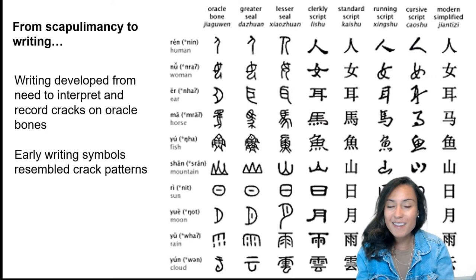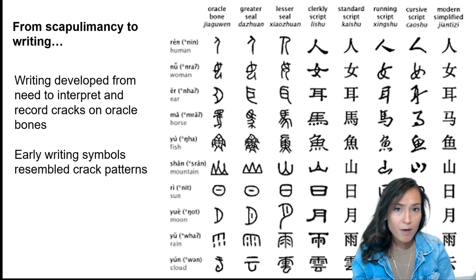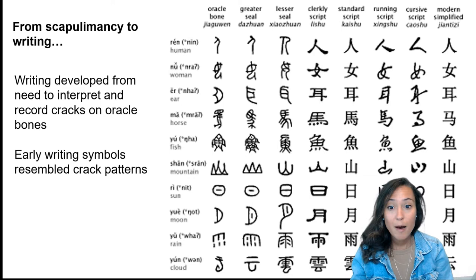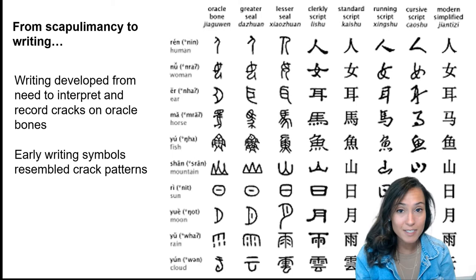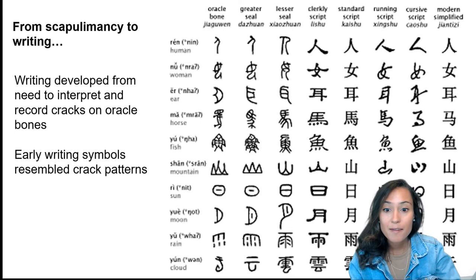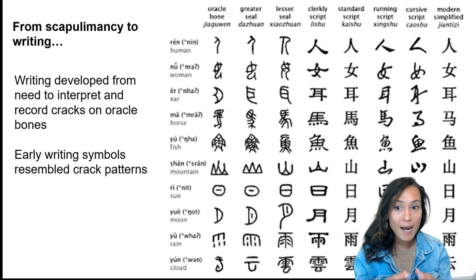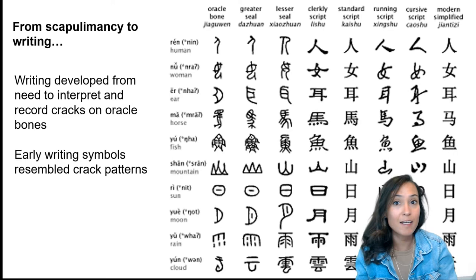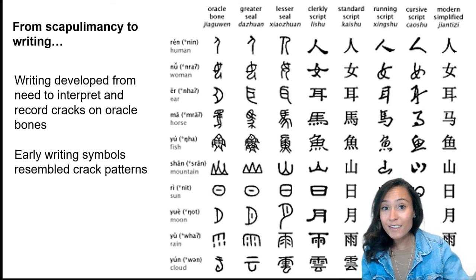You may be thinking, what does scapulomancy and divination have to do with writing? No written inscriptions accompany these oracle bones at Shang Ziya, but written inscriptions have been found elsewhere associated with similar types of oracle bones. Scholars suggest that Chinese writing originated from the need to interpret the fissures and cracks that appeared on oracle bones. New writing symbols actually began to resemble the crack patterns seen at oracle bones found at sites like Shang Ziya.